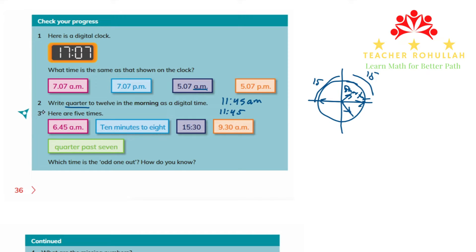In question three, it says: here are five times — 6:45 a.m., 10 minutes to 8, 15:30, 9:30 a.m., quarter past seven. It is asking which time is the odd one out and how do you know?